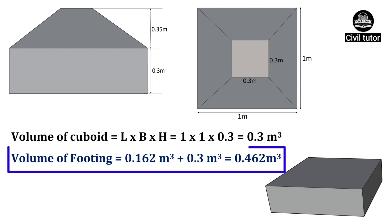Finally, volume of footing = volume of truncated solid (0.162 m³) + volume of cuboid (0.3 m³), giving a total of 0.462 m³.